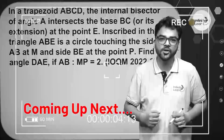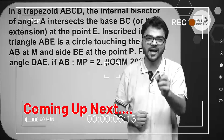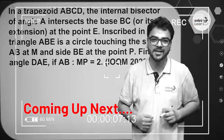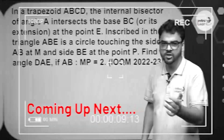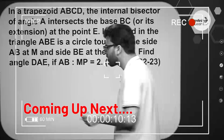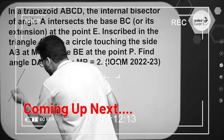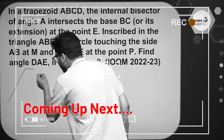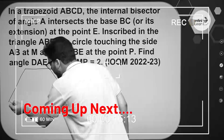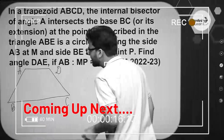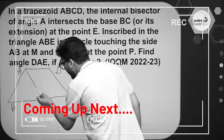Here we have a question which was asked in the IOQM last year. Let's do this one. Let's make the figure according to the question — we have a trapezium ABCD, and we'll construct the internal bisector of angle A.